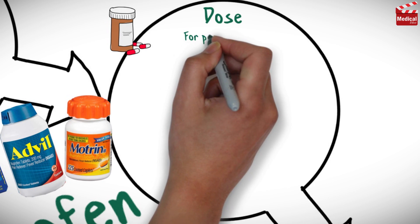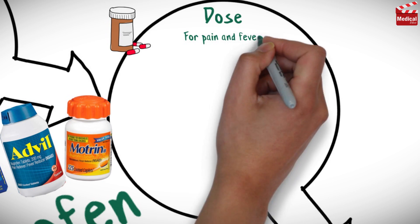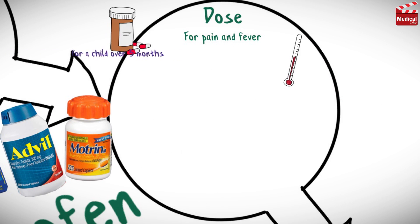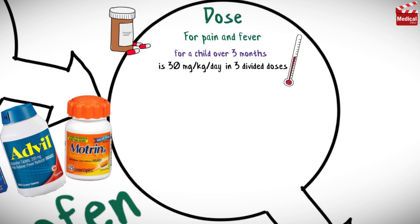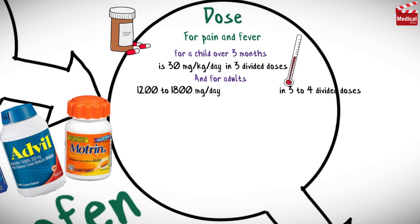The usual dose for pain and fever for a child over 3 months is 30 mg per kg per day in 3 divided doses. For adults it is 1200 to 1800 mg per day in 3 to 4 divided doses.